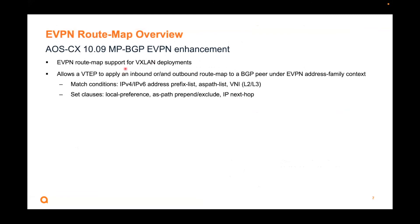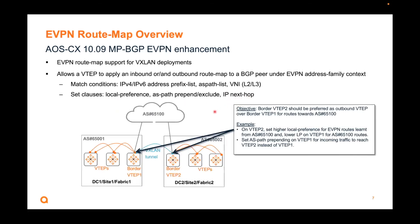Route map: 10.9 adds support for BGP EVPN route maps, really for VXLan since EVPN is only used for VXLan right now. These are the different match conditions applicable under the EVPN address family context: IPv6 and IPv4 address prefix list, AS-path list. You can match on L2 and L3 VNI. You can set local preference values, AS-path, prepend/exclude, and set the IP next-hop.